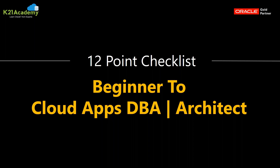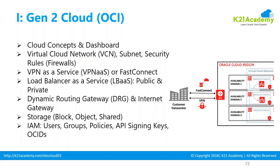So what is the Beginners to Cloud Apps GBA 12-point checklist? First, you need to learn about Generation 2 Cloud — cloud concepts, dashboards, virtual cloud network, subnet, security rules, VPN as a service, load balancer as a service, dynamic routing gateway, internet gateway, storage — different types of storage: block, object, shared — and different types of identity management: users, groups, API signing keys.